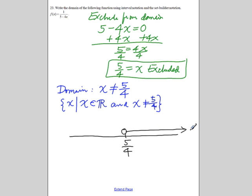All the numbers higher than 5 over 4 will be in the domain, and all the numbers less than 5 over 4 will also be in the domain. You can see the domain is the union of these two intervals.